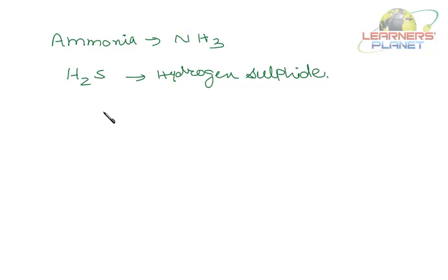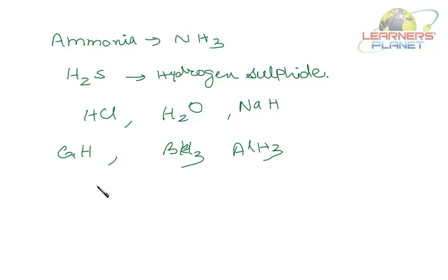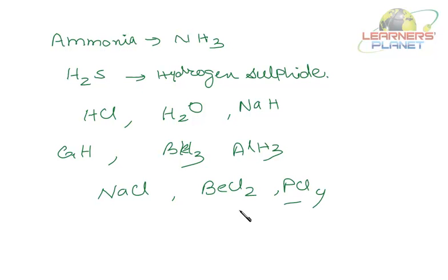So a molecule can be H₂S, HCl, H₂O, NaCl, BeCl₂, PCl₄, and many others. The atoms of elements combine to form molecules — either similar atoms combining to form a molecule of an element, or dissimilar atoms combining to form a molecule of a compound.